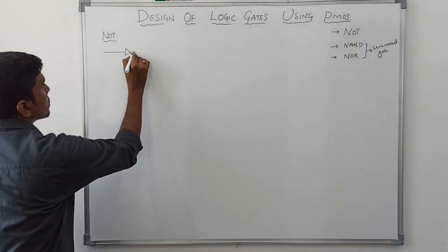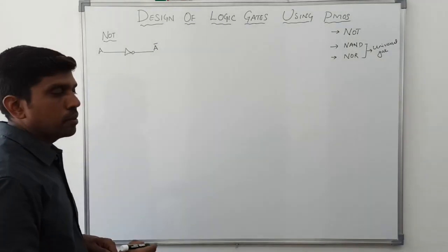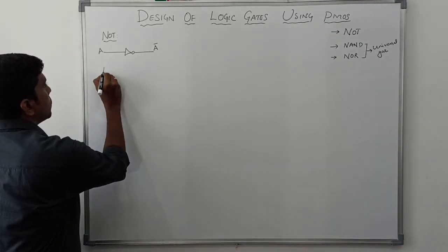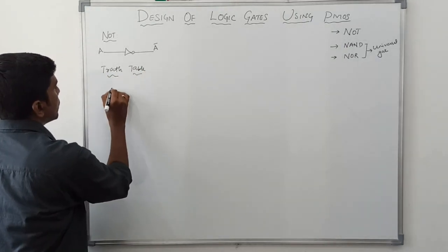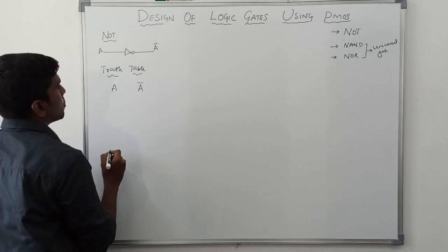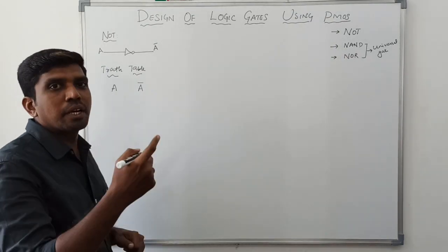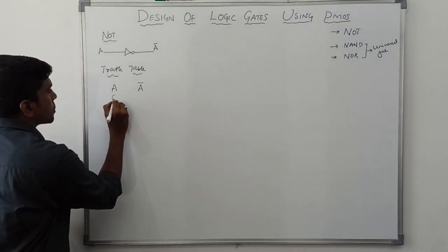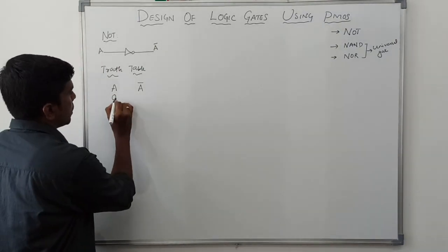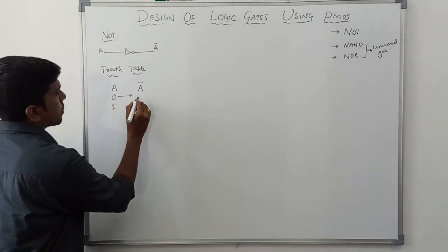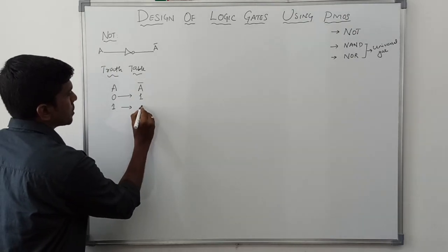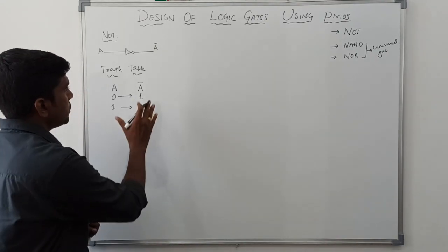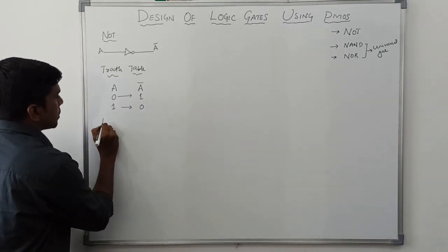So let me draw the symbol of NOT gate. The input is A and the output is A-bar. Now I am writing the truth table. Input A and output A-bar — it is a one-variable gate making two combinations of input: zero and one. When input is zero, the output is one because we take the one's complement. When input is one, the output of the NOT gate is zero.